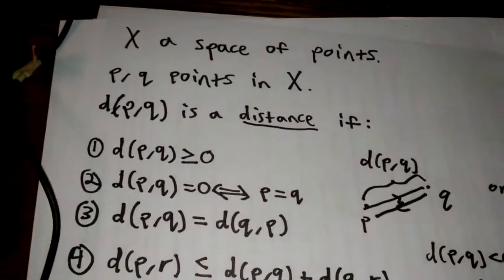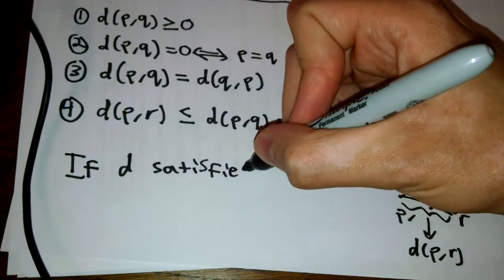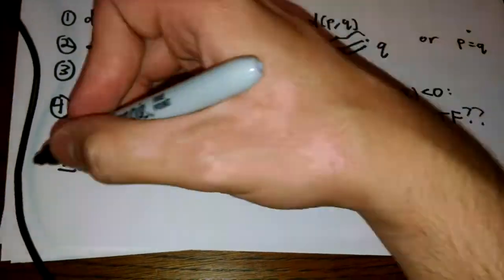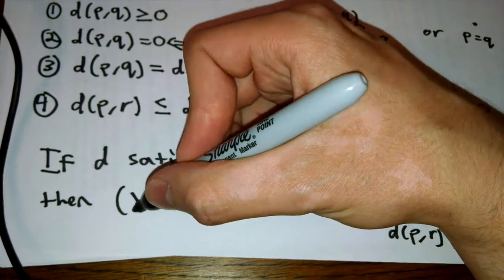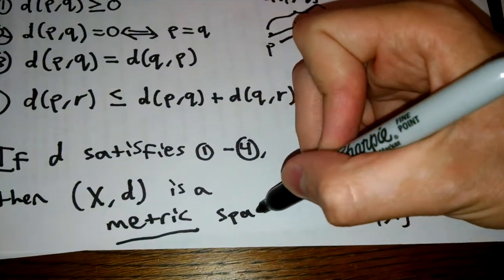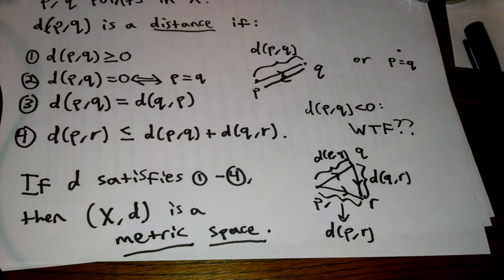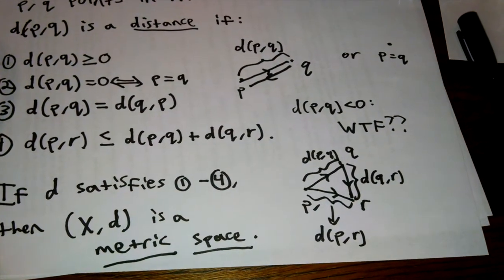So if you have some space, some universe X, and X has this metric structure on it — this function d that satisfies these four properties — then in mathematics we call the pair of objects X and d a metric space. Metric spaces are beautiful and excellent, and they have a lot of really great properties. They really encompass a lot of mathematics, and a lot of what my work and my colleagues' work revolves around. This is a small, and in some ways relatively simple, example of the ways in which mathematics takes certain familiar ideas and makes them a little more abstract.